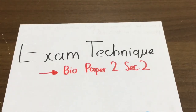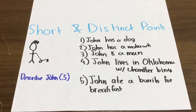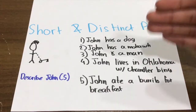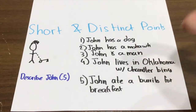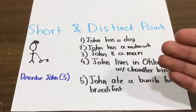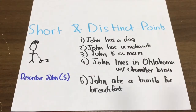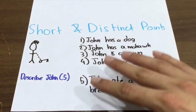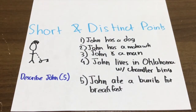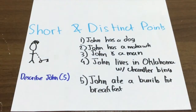So what is a short and distinct point? This is an important concept. Short and distinct points are just points that are different from one another — I'm not reiterating anything. For example: John has a dog, John has a mohawk, John is a man — they're all different points. So if an IB bio paper question said 'describe John for five marks,' these are the kinds of things I would write. But it's not only about writing distinct points — it's also about writing short ones.